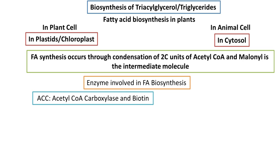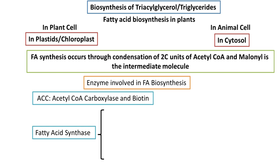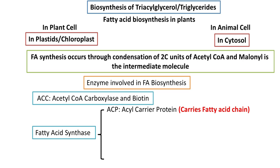Fatty acid synthesis occurs through condensation of two-carbon units of acetyl coenzyme A, which is a two-carbon compound. Malonyl coenzyme A is also produced as an intermediate molecule. The key enzymes involved in fatty acid biosynthesis include ACC (acetyl-CoA carboxylase) with biotin, and fatty acid synthase, which mainly contains ACP (acyl carrier protein) that carries the fatty acid or acyl chain.